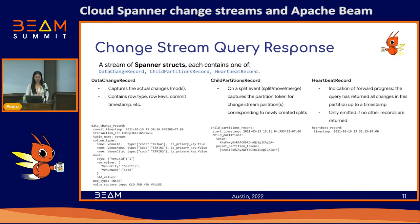If a user receives a child partition record, it means the current query is terminated and they need to start a new query with the new child partition records. The final type of record is a heartbeat record — it is an indication of forward progress, meaning the query has returned all changes in a partition up to the timestamp specified in the heartbeat record. The interval at which heartbeat records are received is determined by the heartbeat milliseconds parameter in the change stream TVF. For a single change stream query, all records will be ordered by commit timestamp.